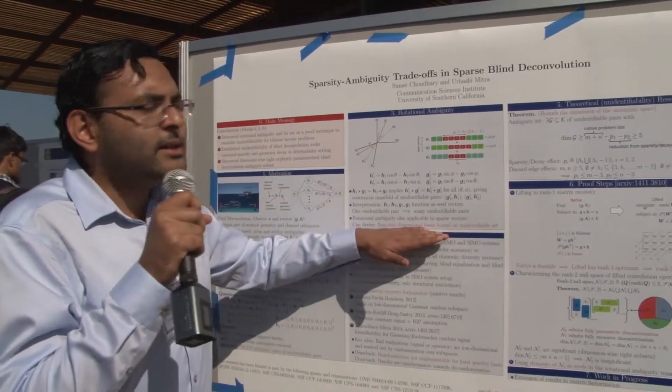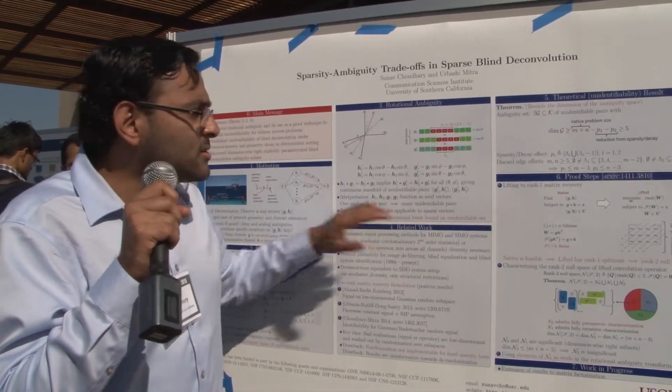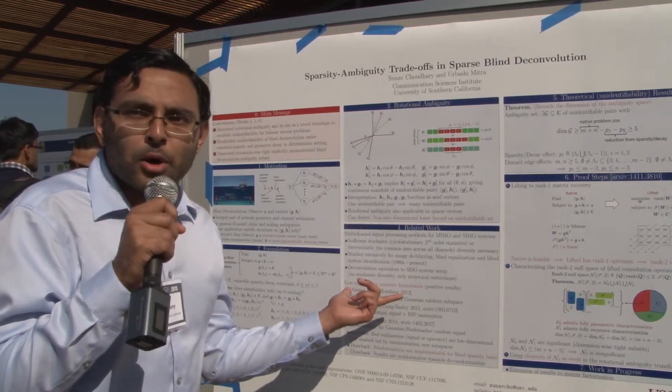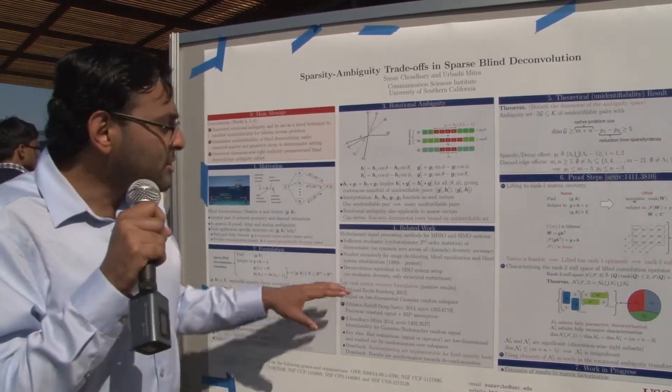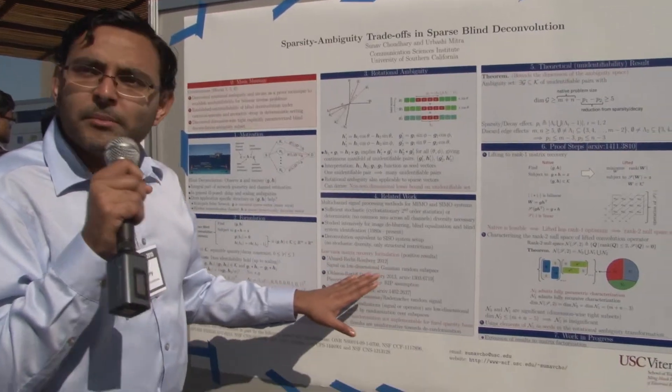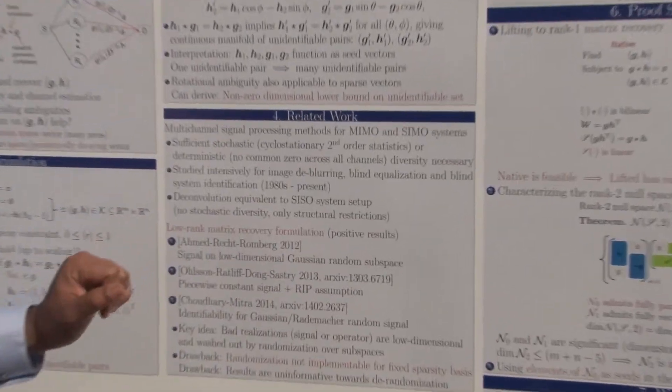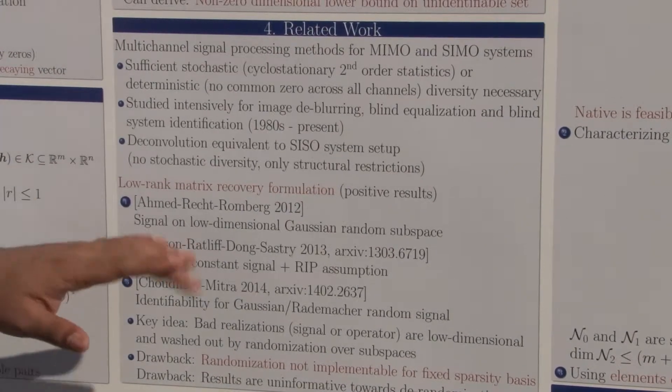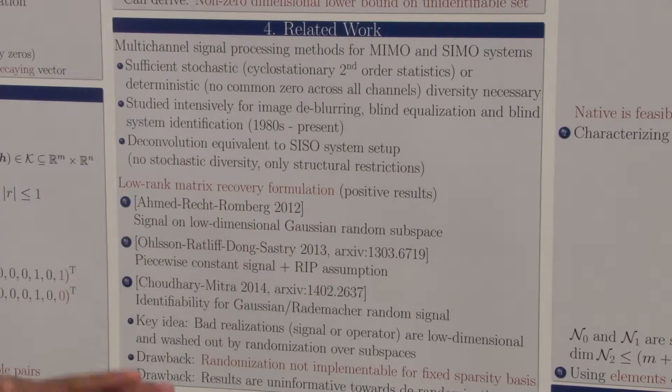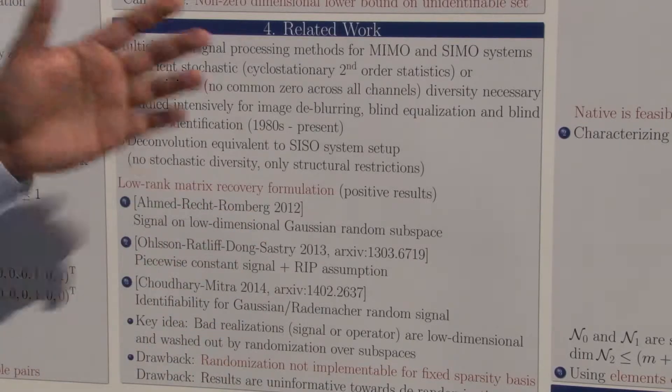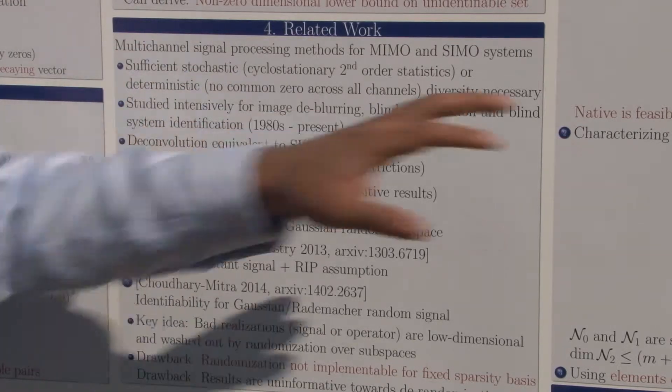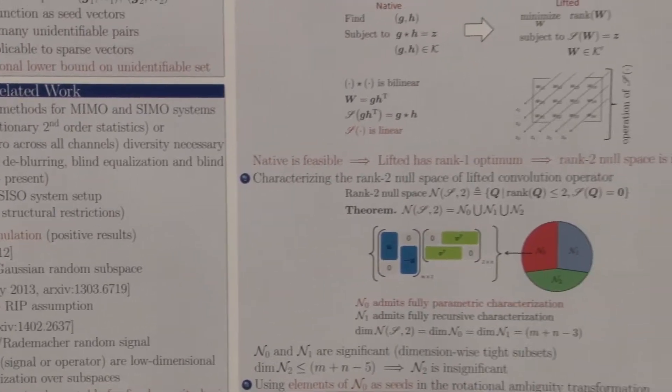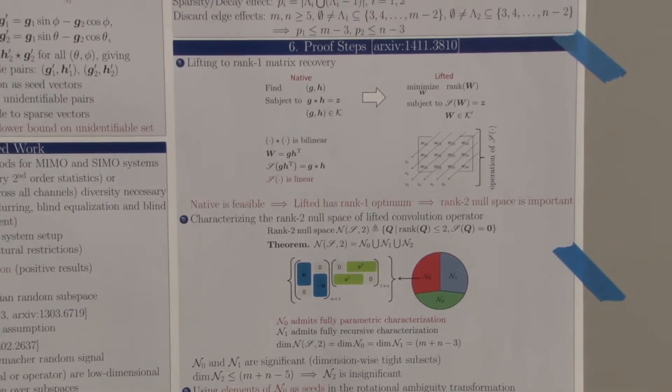The way we did this is to first transform the problem into a low rank matrix recovery formulation. The first time this was done, to my knowledge, was by a paper by Justin Romberg in 2012, where they assumed that one of the two unknown vectors you could precode by a Gaussian random subspace. In this setting, you can use low rank matrix recovery formulations to efficiently recover the unknown signals using nuclear norm minimization.